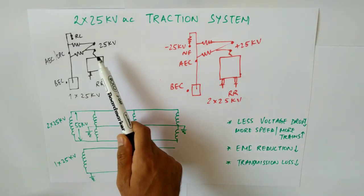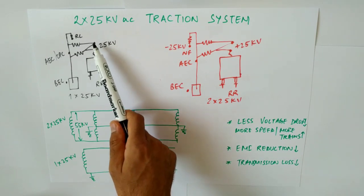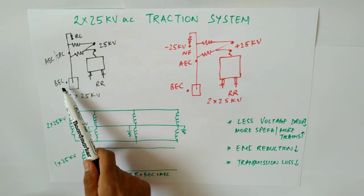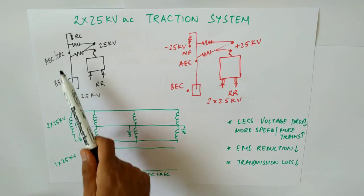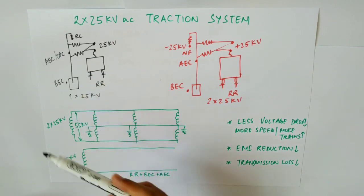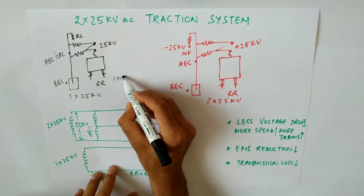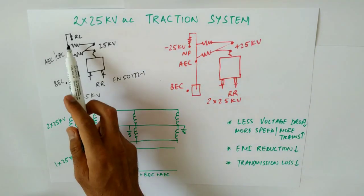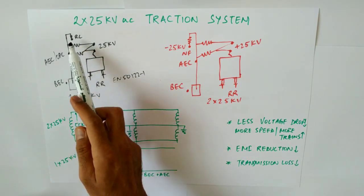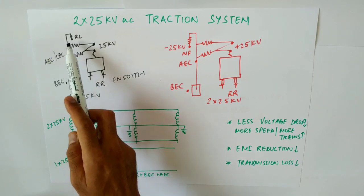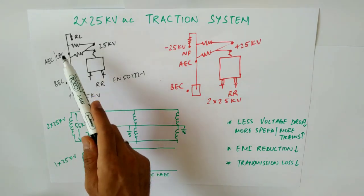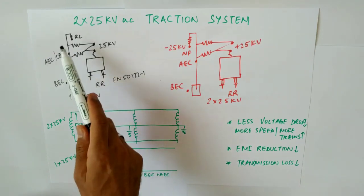In the 1×25 kV system, we have the OCS system — catenary and contact wire — carrying 25 kV supply, and then the running rails, buried earth conductor, and OPC, which are all connected together at regular intervals to reduce rail potential and maintain it as per EN 50122-1. The return conductors are generally around ground potential — they can be up to 60 volts but typically we say they are at ground potential.